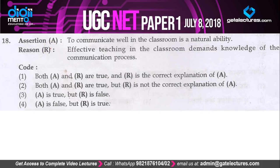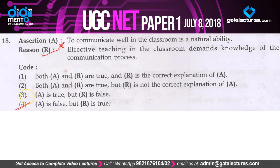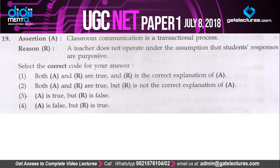Question 18 is another assertion-reason question. Assertion: to communicate well in the classroom is a natural ability — this is false; it is actually an acquired, learnt ability. Reason: effective teaching in the classroom demands knowledge of the communication process — this is right. So A is false, R is true — correct option is option 4.